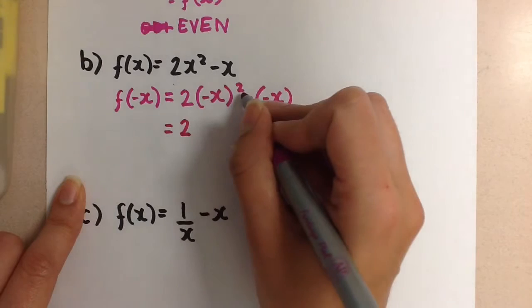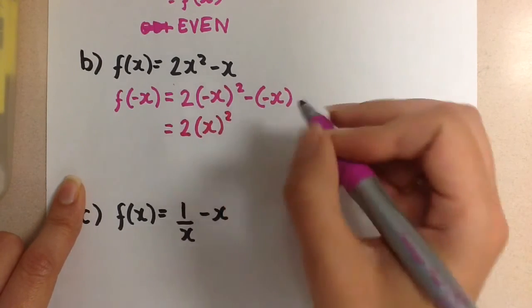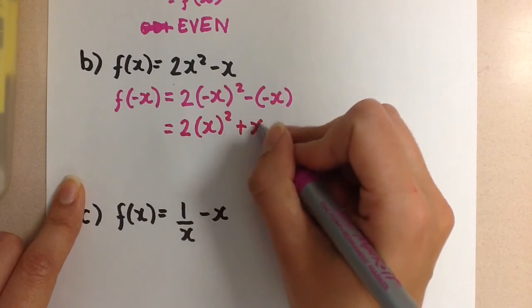We get 2(-x)² - (-x). And we're going to simplify here to get 2. Again, we have a negative with an even exponent. So this is going to become positive x². And then the two negatives make it positive and we get the plus x.